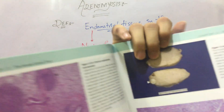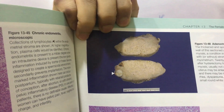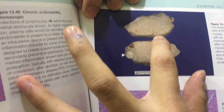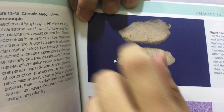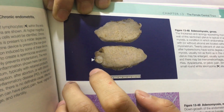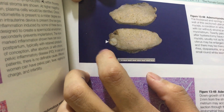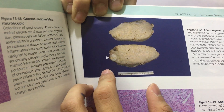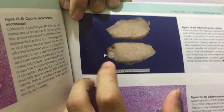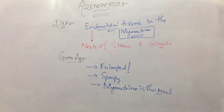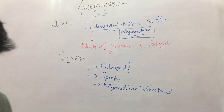This is a gross picture of Adenomyosis. You can see that the uterus is somewhat enlarged and somewhat spongy in nature. By the way, can you tell me what this is? This is basically a Leiomyoma — not relevant to our topic, but I just noticed it here. So, to summarize the gross appearance: the uterus is enlarged, spongy, and the myometrium is thickened.